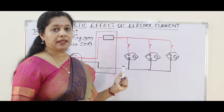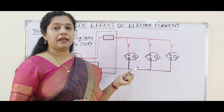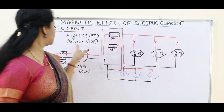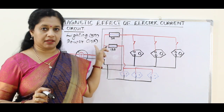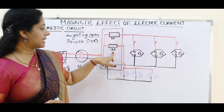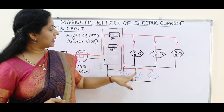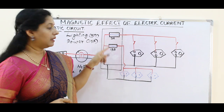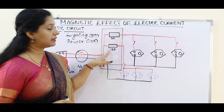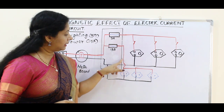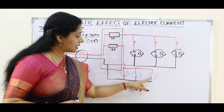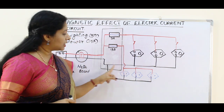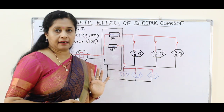Suppose this is the 5 ampere lighting circuit. We can also connect a 15 ampere power circuit in parallel to this. The neutral wire is going out from both. So here also, each circuit is in parallel — the lighting circuit at 5 amperes and the power circuit at 15 amperes are connected in parallel to each other.